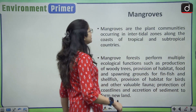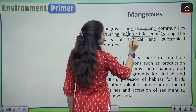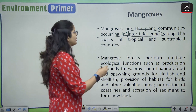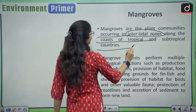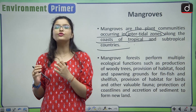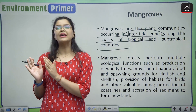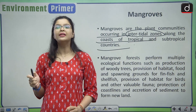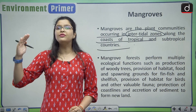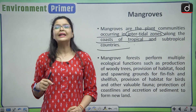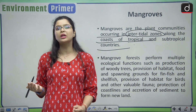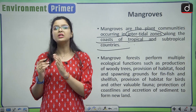Mangroves are plant communities occurring in intertidal zones — kindly note this as it can be asked in your prelims examination — along the coasts of tropical and subtropical countries. They are called the lungs of our planet. They have excellent carbon-absorbing capacity; mangroves absorb almost double the carbon compared to a regular forest. They also have the unique survival capacity in high tides, reducing the waves of tides, and that is why they are very important.